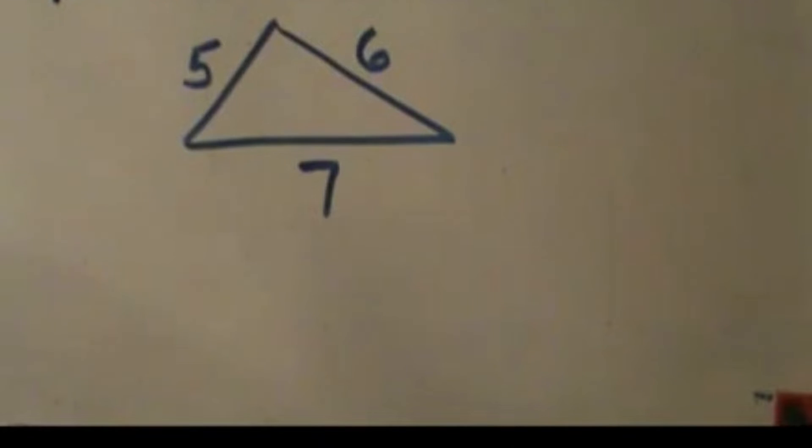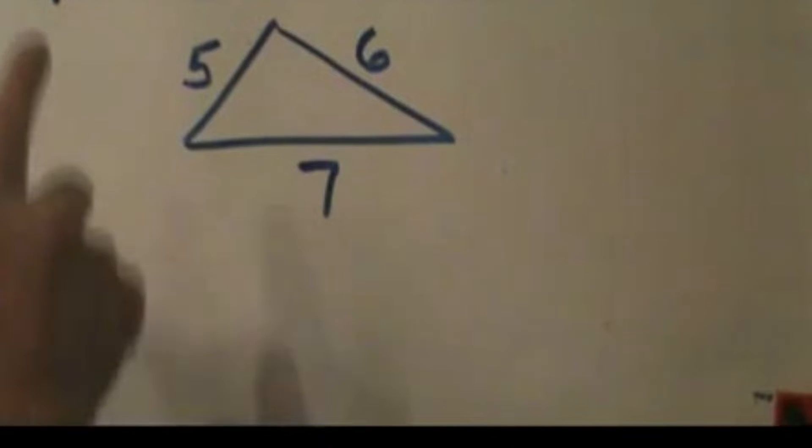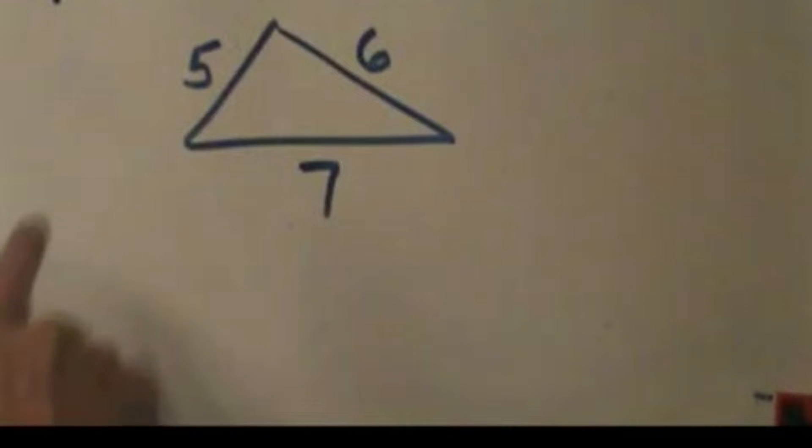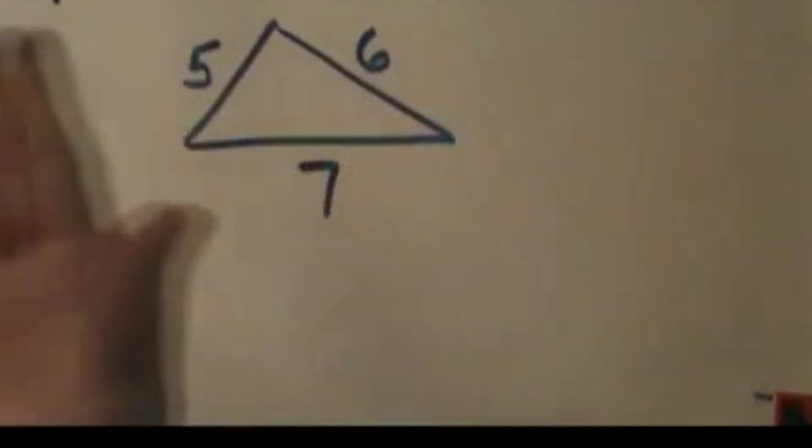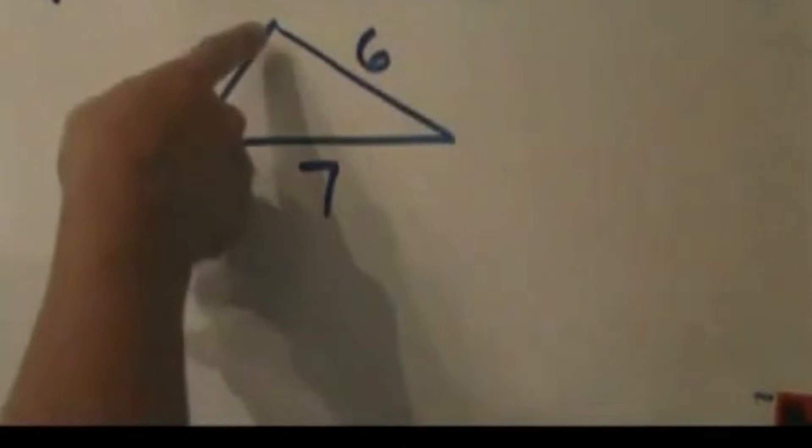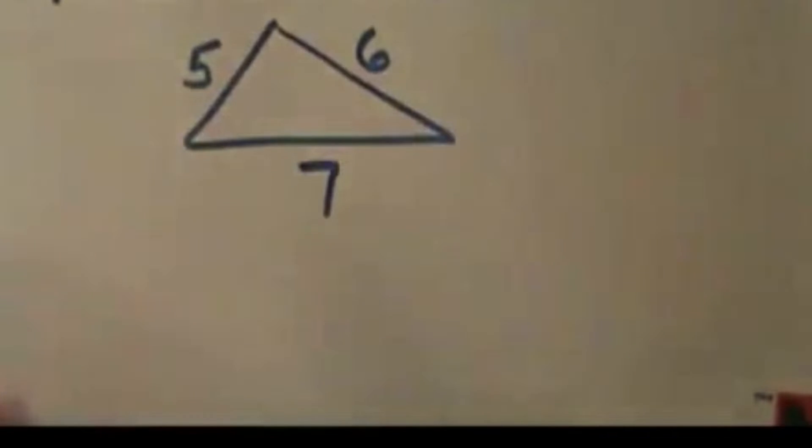Welcome to Moo Moo Math. Today we're going to look at Heron's formula. This is a formula to find the area of a triangle where you don't know the altitude, but you do know the three sides.